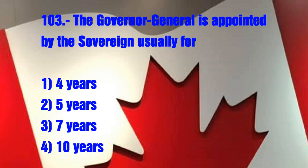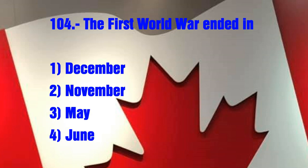Question No. 103. The Governor General is appointed by the Sovereign usually for: 1. Four years, 2. Five years, 3. Seven years, 4. Ten years. The answer is 2. Five years.